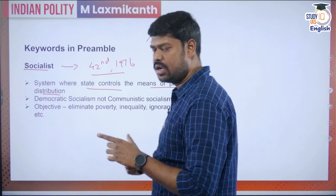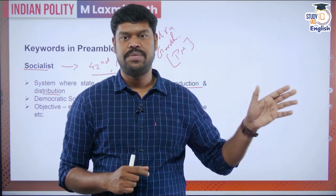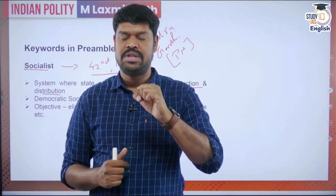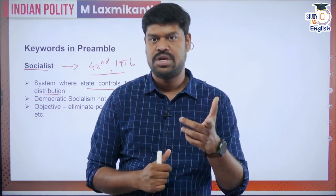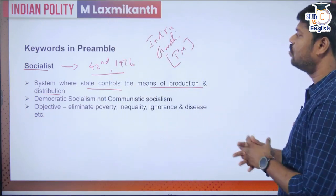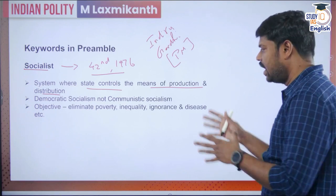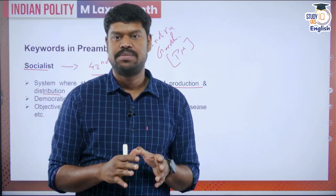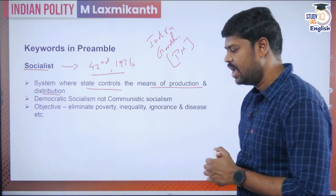On the contrary, there are certain models of socialism called communistic socialism — an extreme form wherein everything is owned by the state. For example, the USSR followed that model, and Cuba even today follows a communistic model. Most states today either follow the capitalistic model or the socialistic model. India follows democratic socialism, the idea being to eliminate poverty, inequality, and ignorance from the society.